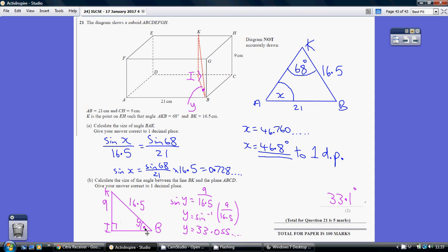All right. This is the angle between KB and the plane. So once you've actually made it two dimensional like this, it's fairly straightforward. It's just SOHCAHTOA. So we know the opposite and the hypotenuse. So we're using the sine rule. Sine Y equals nine over 16.5. Inversing both sides, we get the angle being 33.055 dot dot dot, which is 33.1 degrees to one decimal place.